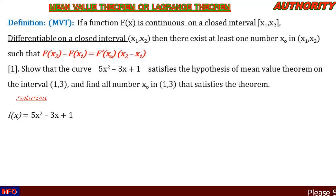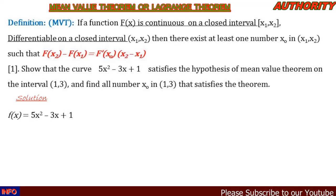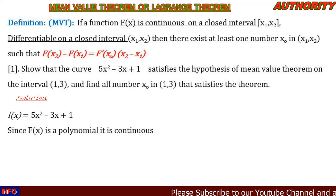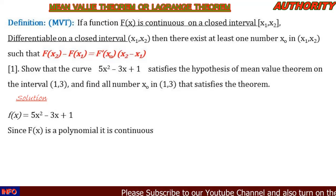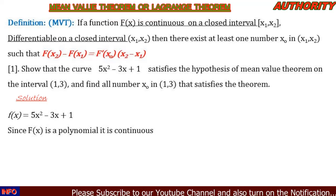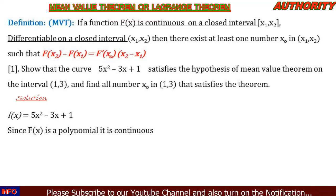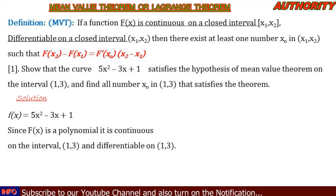We have the function f(x) = 5x² − 3x + 1. We can see that this function is a polynomial, and since it's a polynomial it is continuous on the interval [1, 3].